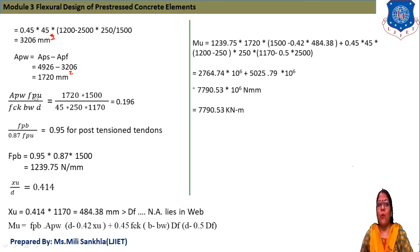Now we take the ratio of APW × FPU / (FCK × BW × D). That is 1720 × 1500 / (45 × 250 × 1170), which equals 0.196. From this table, FPB / (0.87 × FPU) equals 0.95 for post-tensioned tendons.